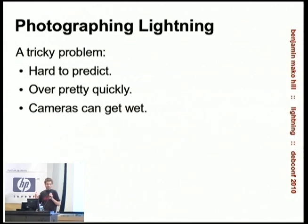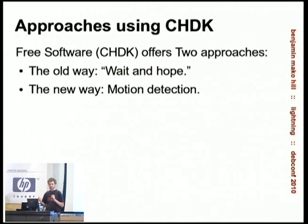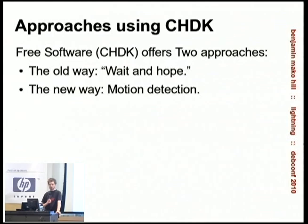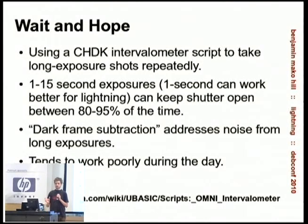The other problem is that if we take a camera out there, it tends to rain a lot with lightning and cameras tend to get wet. Free software has presented a solution through the Canon Hacker's Dev Kit (CHDK), which is basically free software firmware for existing Canon cameras — especially cheap Canon cameras that cost $100 or even $50 — and we don't mind when they get wet. There are two ways people have been taking photographs of lightning using CHDK: the simple wait-and-hope method, and newer motion detection.